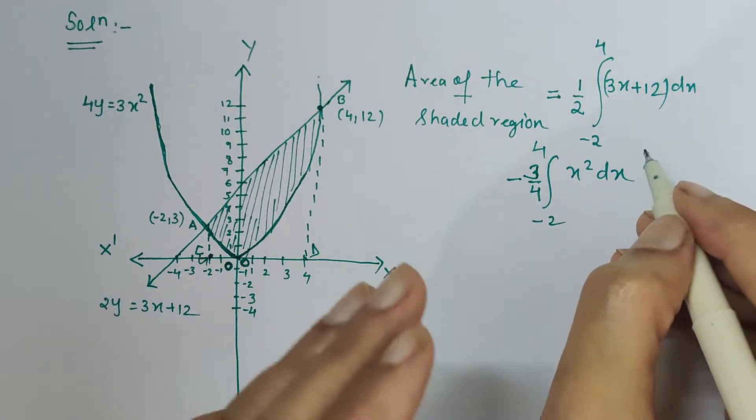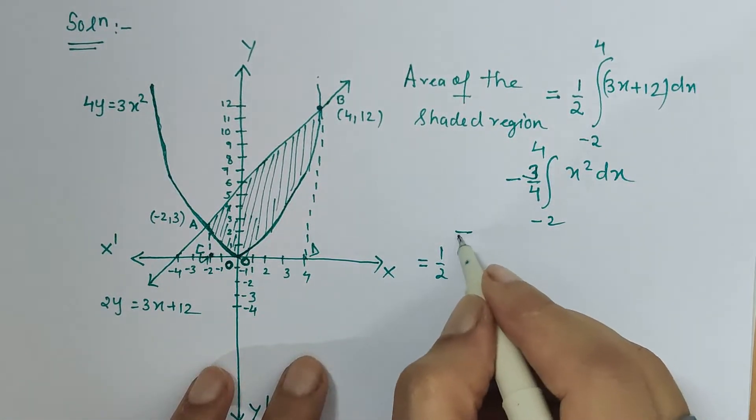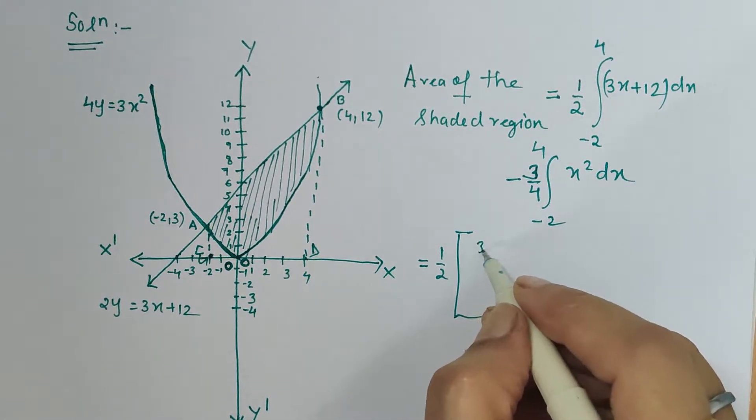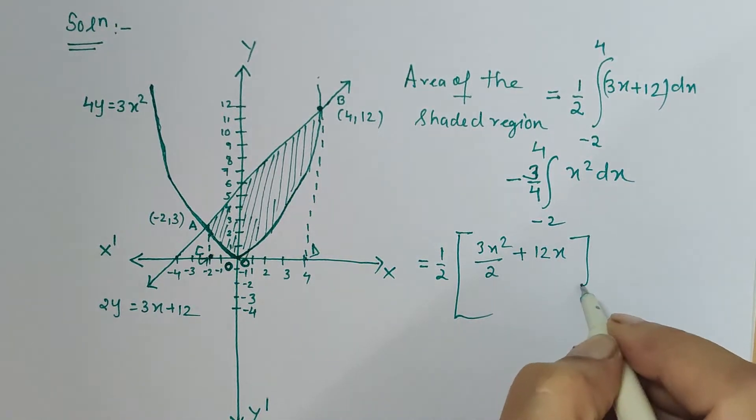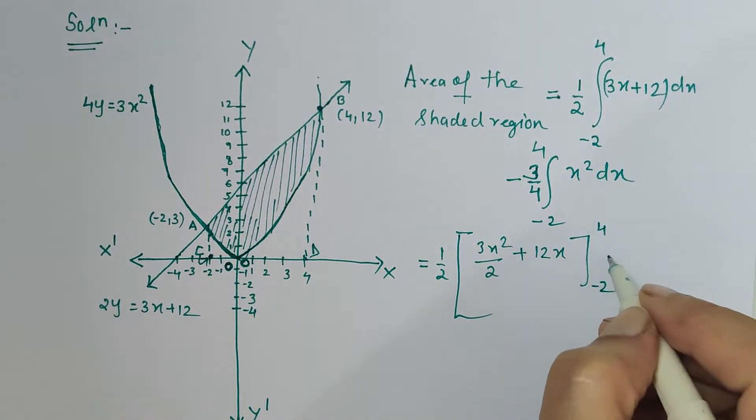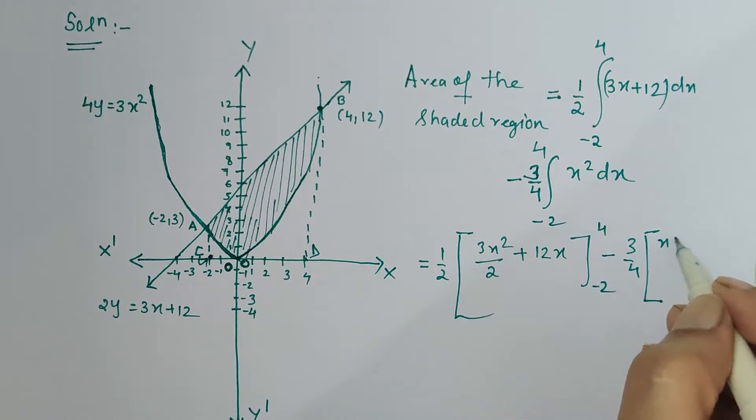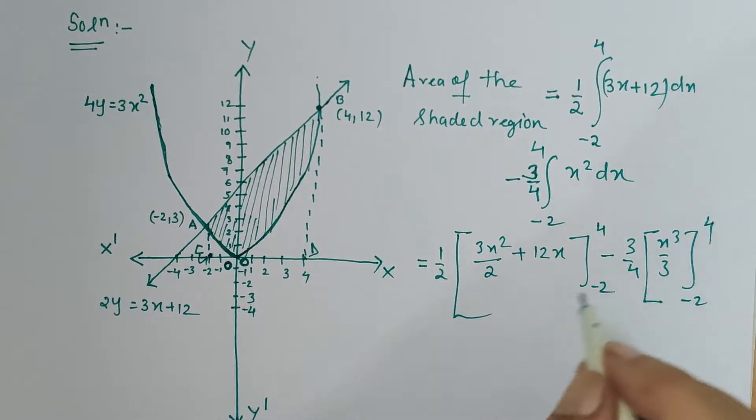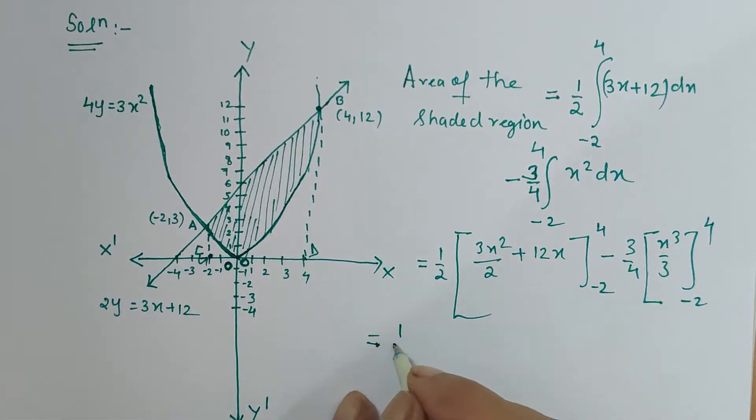Now we have to integrate this and the solution will be in our hand. So half of, let's put the bracket, we know how to integrate 3x: it will be 3x²/2 + 12x, and let's put the limits -2 to 4. Minus 3/4, then again put the square bracket, x² will be x³/3, and the limits -2 to 4. We have to be very careful while calculating to avoid any error.